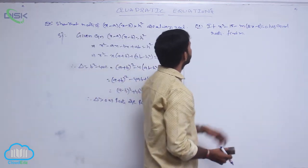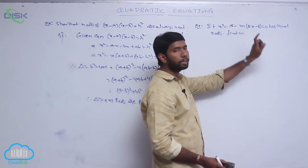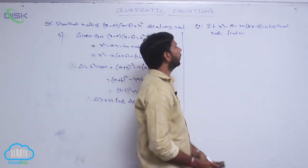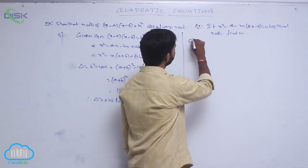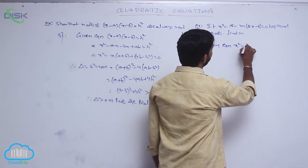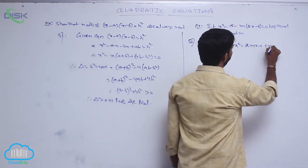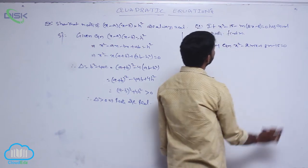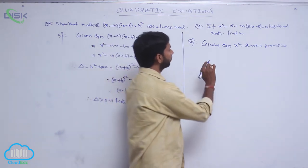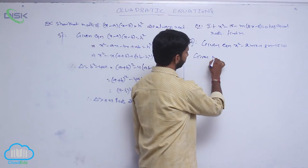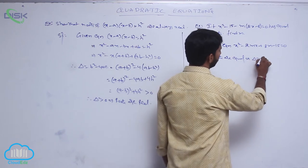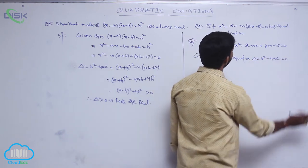Next example: if x square minus 15 minus m(2x minus 8) equals 0 has equal roots, find the value of m. Equal roots means the discriminant is equal to 0. The given equation simplifies to x square minus 2mx plus 8m minus 15 equals 0. Since the roots are equal, b square minus 4ac equals 0.